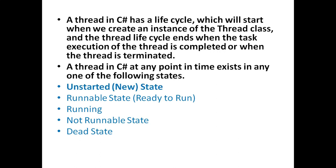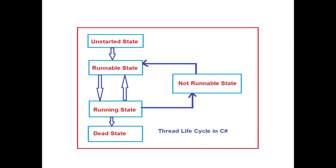The states are: unstarted state (that is new state), runnable state (that is ready-to-run state), then running state, not runnable state, and dead state. This is the pictorial representation of the thread lifecycle in C#.